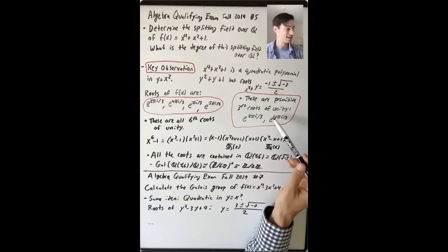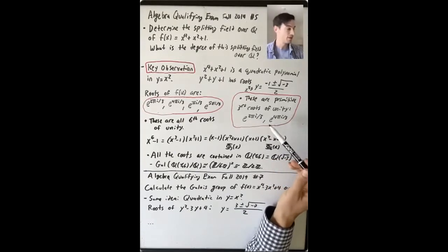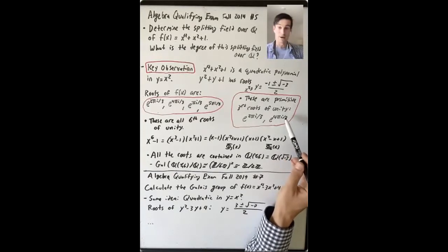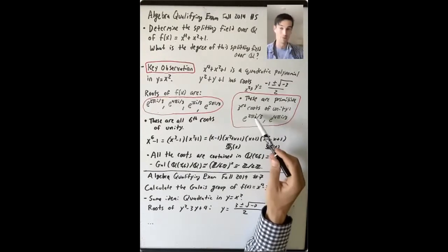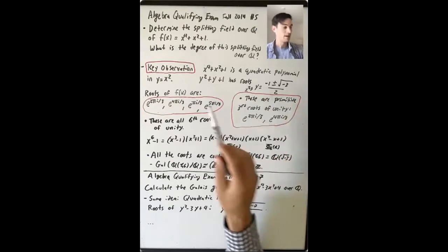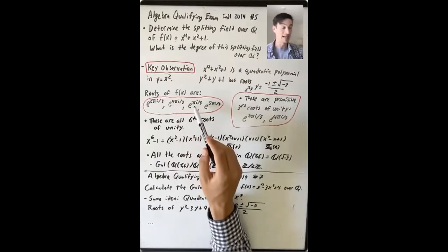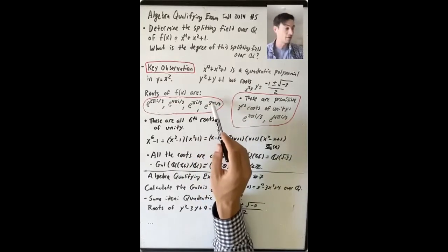One thing that squares to e^(4πi/3) is e^(2πi/3). The other two take a bit of thinking. If you square e^(4πi/3), you get e^(8πi/3) = e^(2πi/3). And e^(5πi/3) squared gives e^(4πi/3). So the four roots of f(x) are: e^(πi/3), e^(2πi/3), e^(4πi/3), and e^(5πi/3).